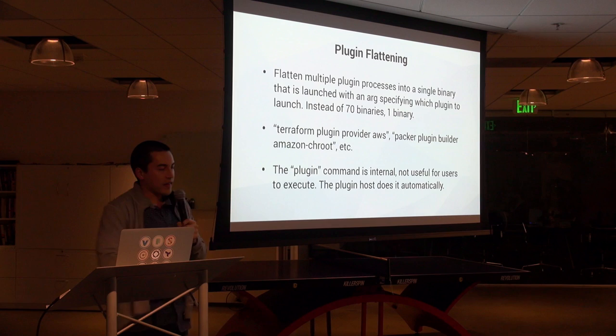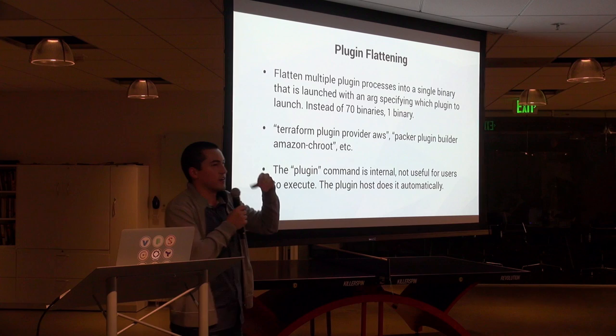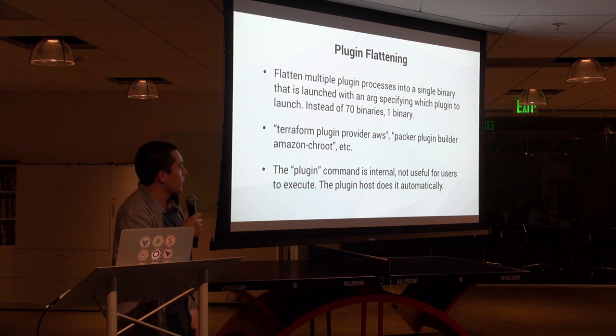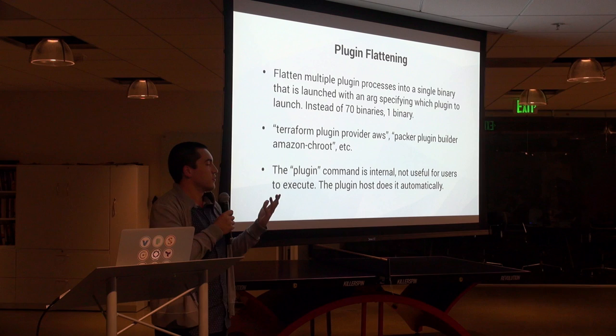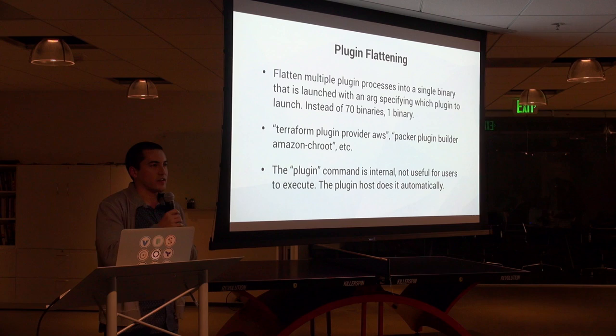The last thing was plugin flattening — flatten multiple plugin processes into a single one. Instead of shipping with 70 binaries, we ship with one. Some commands launch the different plugins — if you do terraform-plugin-provider-aws, that invokes just the AWS plugin. We'd ship a single binary that we re-invoke multiple times. The plugin command is internal, so Terraform -h will never show you the command. That ended up reducing our file size down to the size of a normal Go binary, which for us is about 20 megabytes.